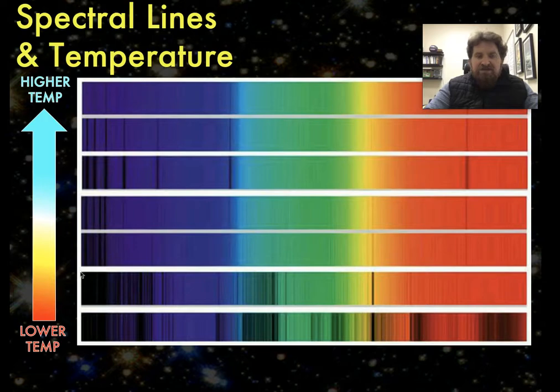But you'll notice that as the star gets cooler, those hydrogen lines get weaker and other lines get stronger. So by looking at the spectral lines of that star, I can tell if it's got weak hydrogen lines but strong sodium lines. That tells me the temperature of the star is probably a bit cooler.